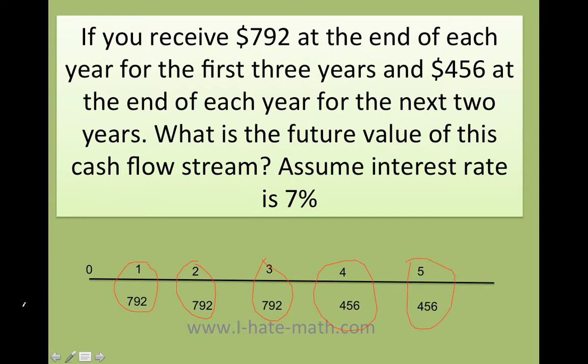Here I cannot use the function of payment on the calculator because unfortunately you can use that function when all your cash flows are the same. That happens when you have an annuity. Here you don't have an annuity. So we're going to go ahead and do it today by hand using the TI-84 and then we're going to do it using Excel.